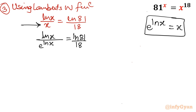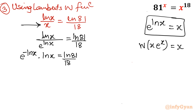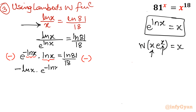Taking the exponent to the numerator, it becomes e to the power minus ln x, times ln x, equal to ln 81 over 18. Now, the Lambert W function identity is W(x e to the power x) equals x. We need to arrange so that the exponent and coefficient match. The power is negative ln x but here we only have ln x, so to match, I multiply both sides by negative 1. The equation converts to: minus ln x times e raised to the power minus ln x equal to minus ln 81 over 18.